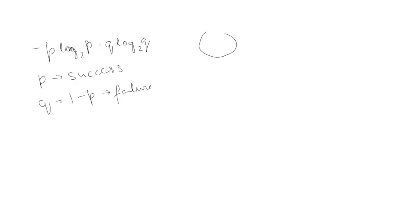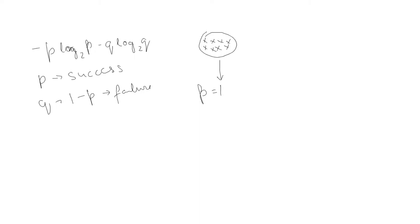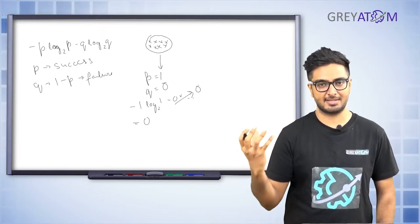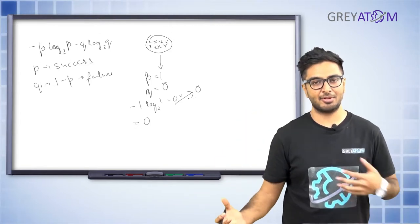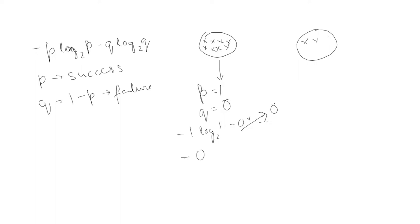Let's consider a completely pure node — one that consists entirely of people who have all watched the movie. The probability p equals 1 and q equals 0. Plugging into the formula: minus 1 times log₂(1) minus 0 times something. The second term vanishes because it's zero, and log₂(1) equals 0, so the entire expression comes out to be zero. So in case of a completely pure node, entropy equals zero.